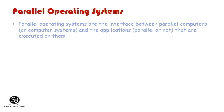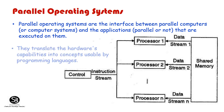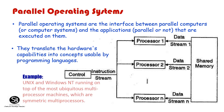Parallel Operating Systems: These are the interface between parallel computers and the applications executed on them. They translate hardware capabilities into concepts usable by programming languages. Currently, the most important examples of OS for parallel machines are UNIX and Windows NT, running on top of most multiprocessor machines.